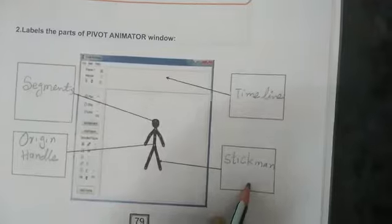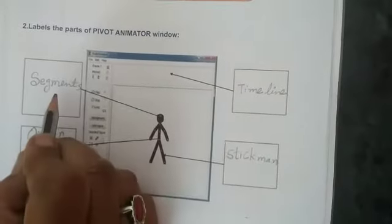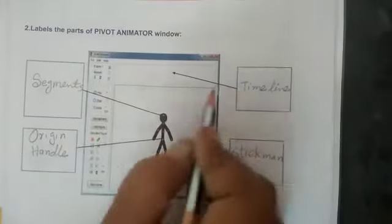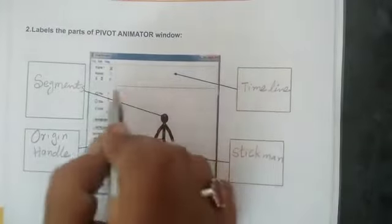Is that clear children? Once again let me repeat. This red color dot is known as segment. Orange color dot is known as orange handle or orange origin. This rectangular box is known as timeline.